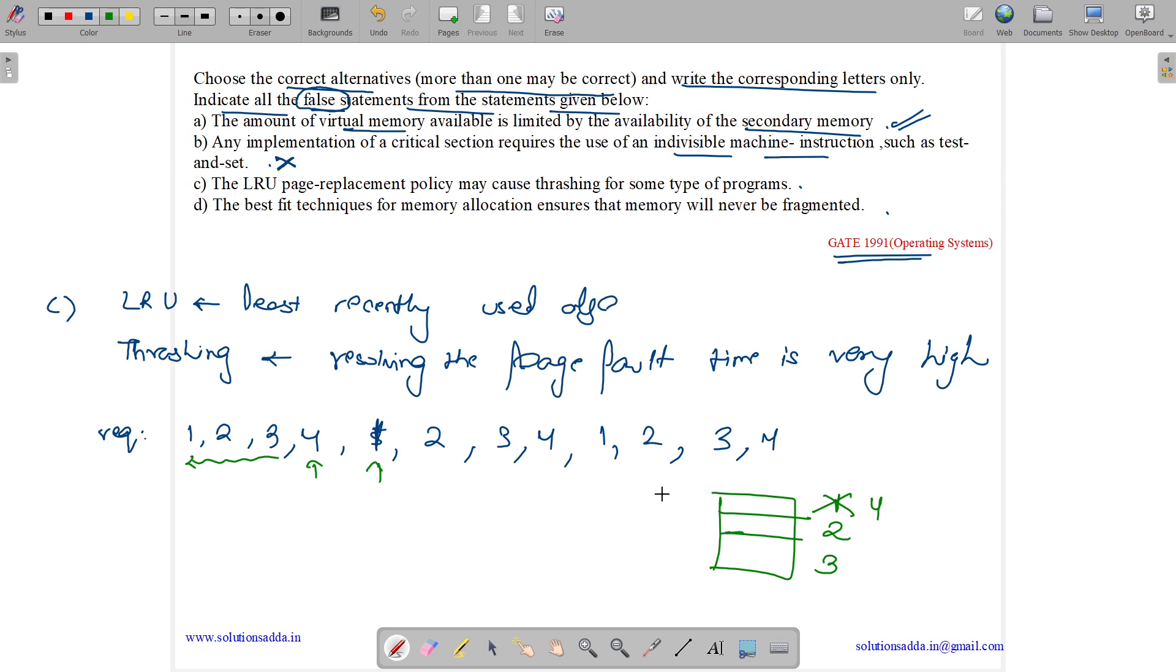Then again 1 came. So we need to see the least recently used, 2. We remove 2 and then put 1 here. Then 2 came. So we need to remove the least recently used. We remove 3 and put 2 here. Then again when 3 comes, we remove this and put 3 here. Thus we are seeing that we are having 1 page fault every time. So why this happened?